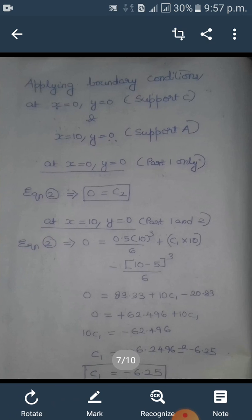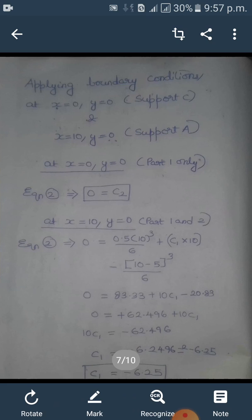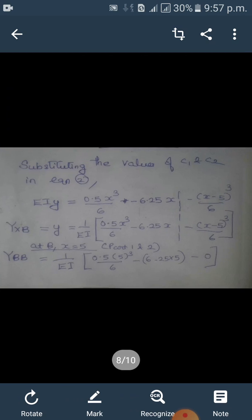Then you have to apply x equals 10 and y equals 0. For this you have to consider the entire equation because the value of x is greater than 5. When you find out, you get C1 equals minus 6.25. Apply these values in the EI y equation. You get the value for y, which is also YxB.